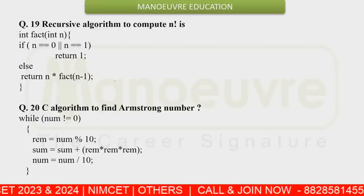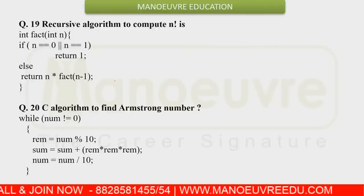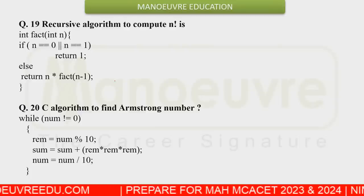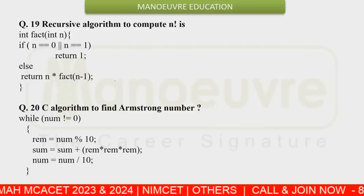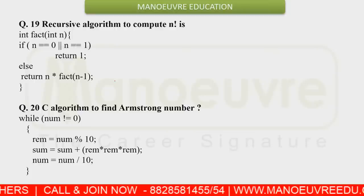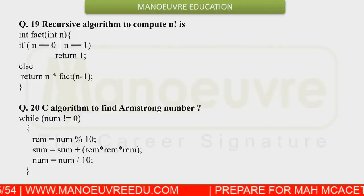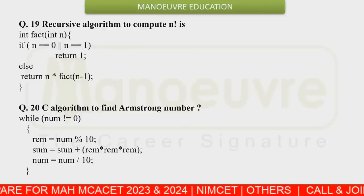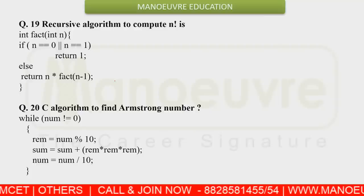There were questions where a full-length program was given in the options — a recursive algorithm or recursive function to calculate n factorial. You need to identify the correct program from four options. Ensure you go through the options very carefully because there were very minute changes between them. You are not writing the program — you just need to identify which one is right. Questions were also related to Armstrong numbers.